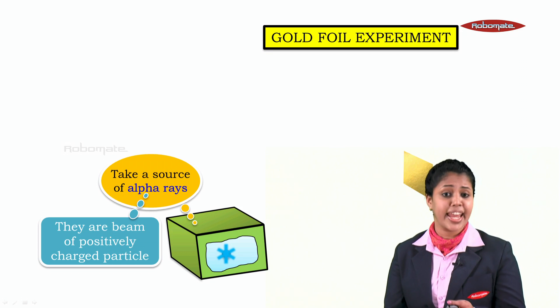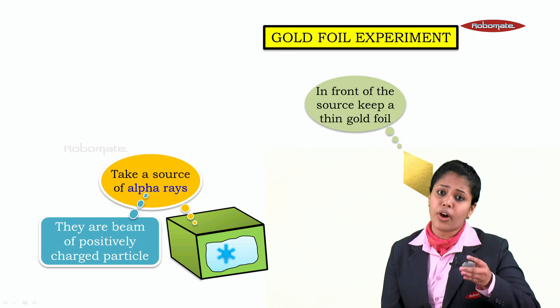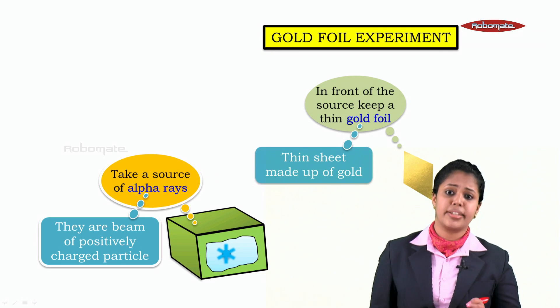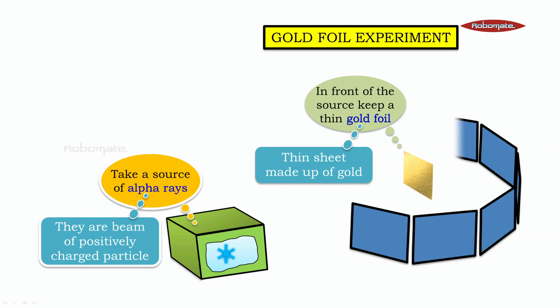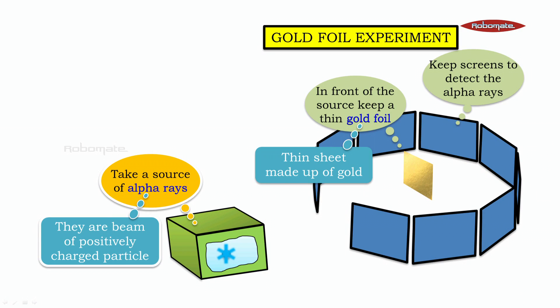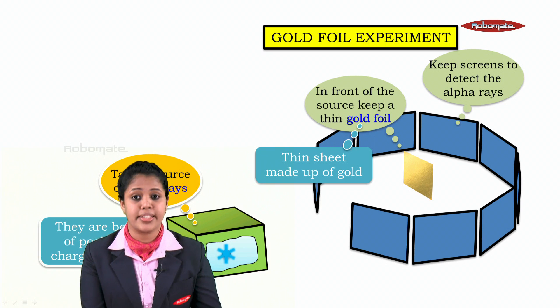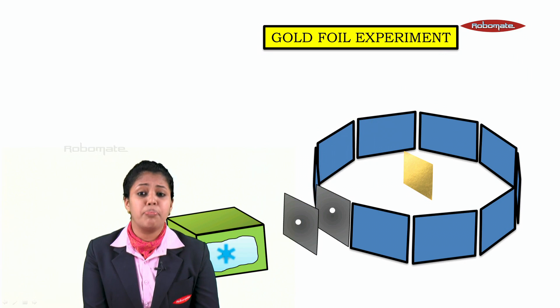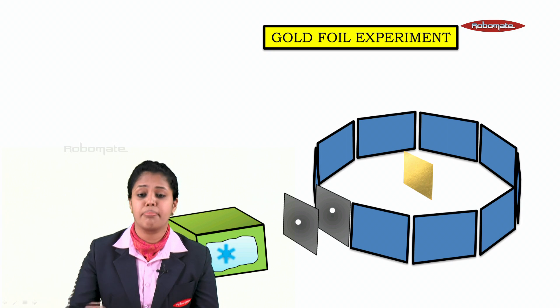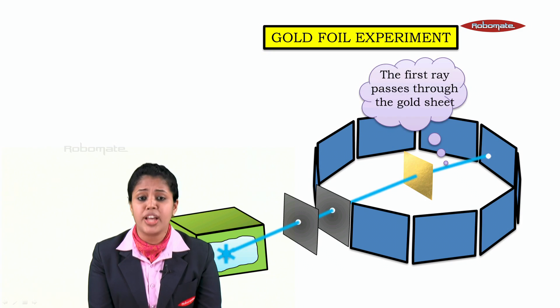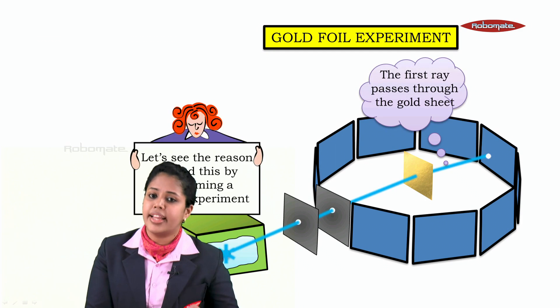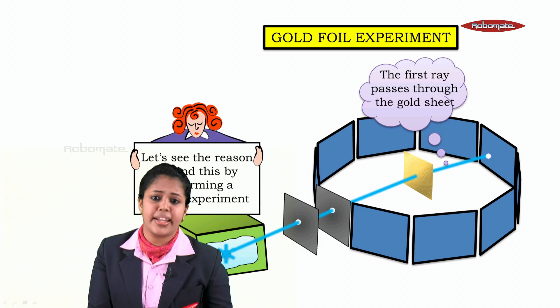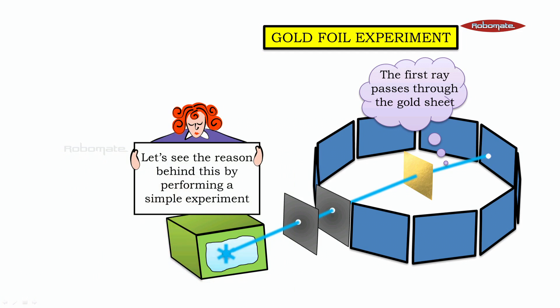A gold foil is nothing but a thin sheet made up of gold. After that, we surround the gold foil with a screen to detect the alpha rays. Now, the beam of alpha rays starts from the source. The first ray, as you can see in the picture, passes through the gold sheet. Let's understand the reason behind this with a very simple experiment.